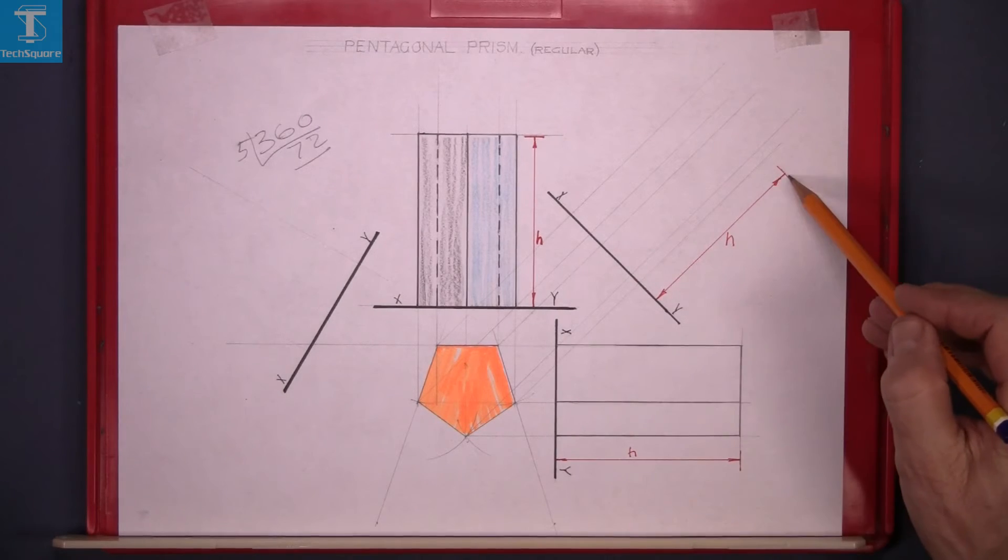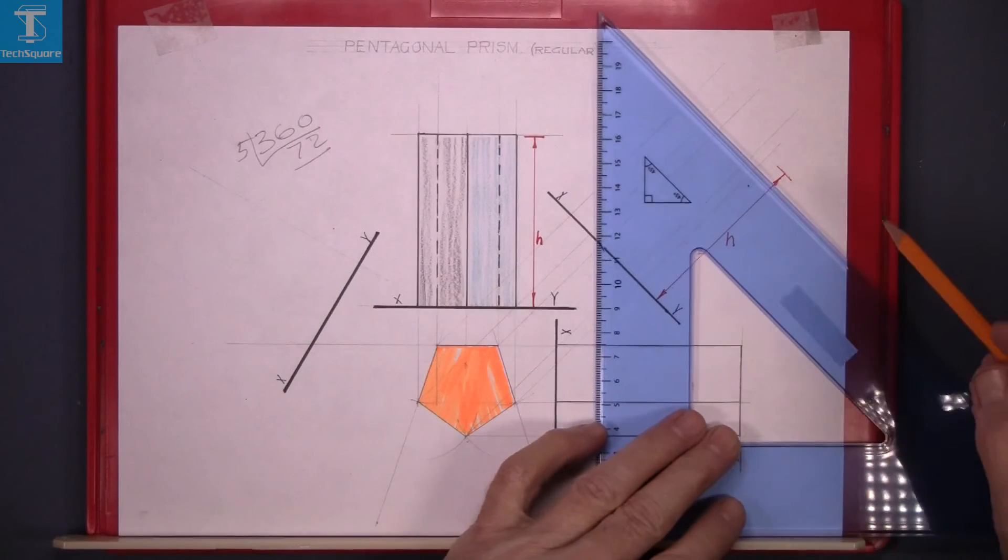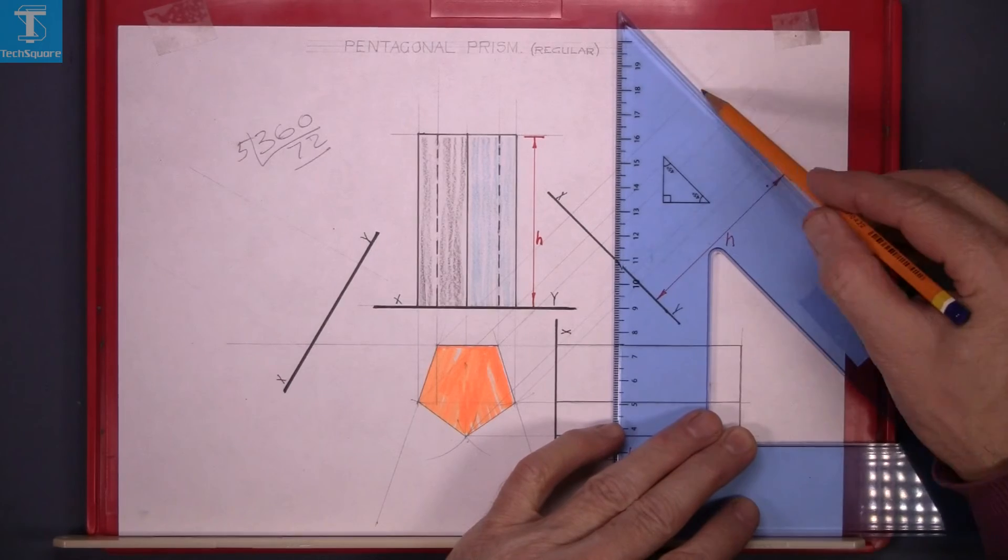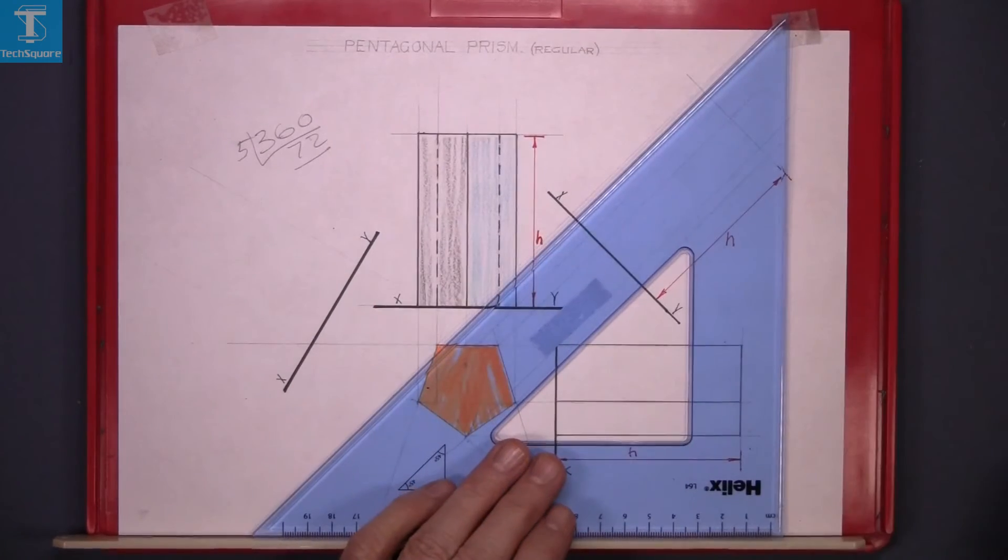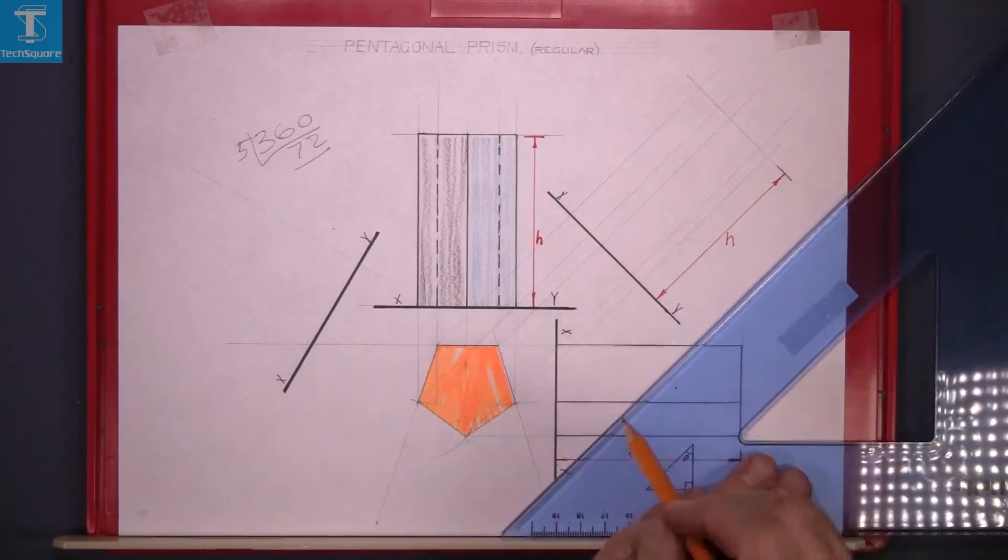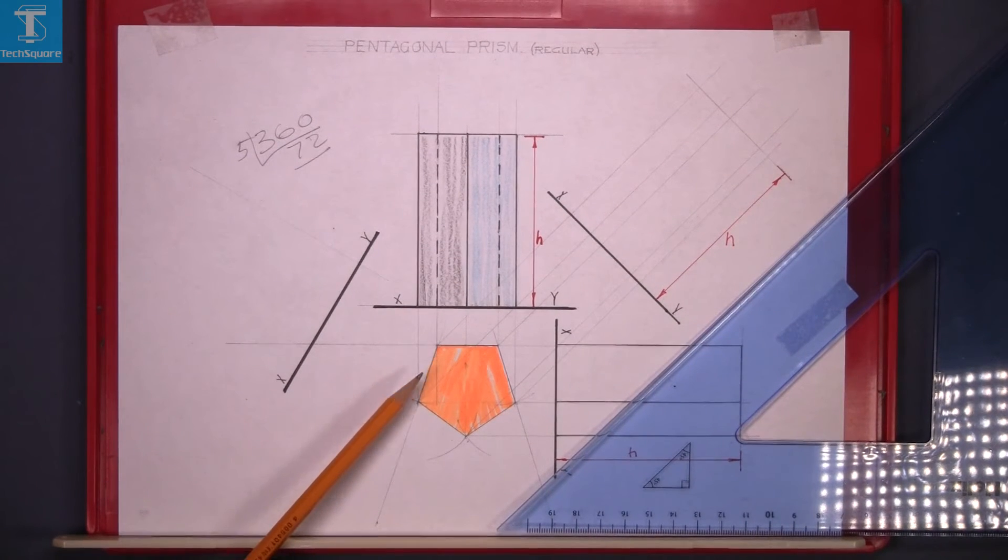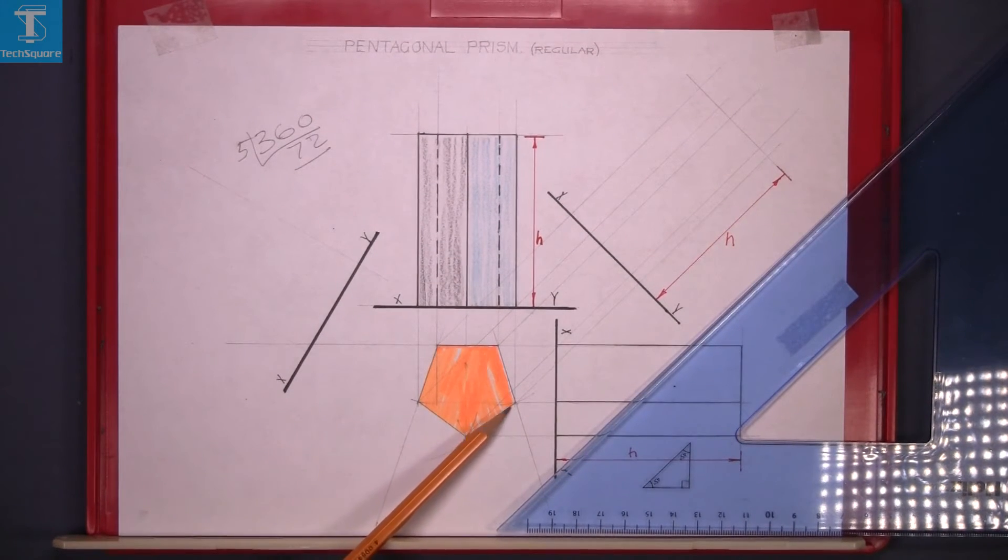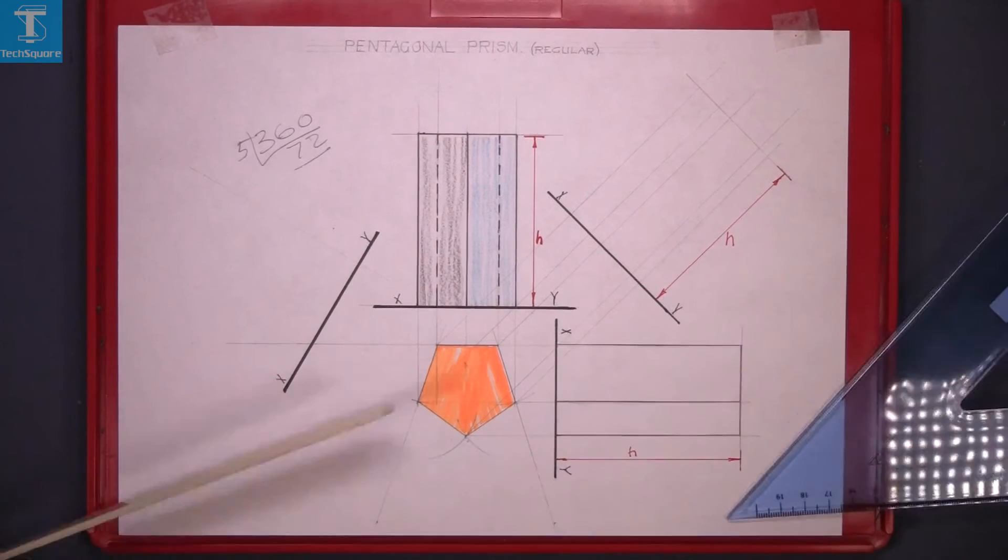Now for the new view up at 45 degrees. Step off the height and line in the lines. We will see this point here, this point, this point and this point. So we bring those points up.